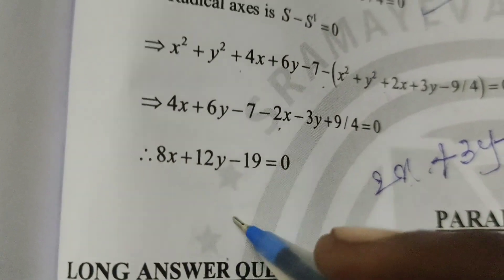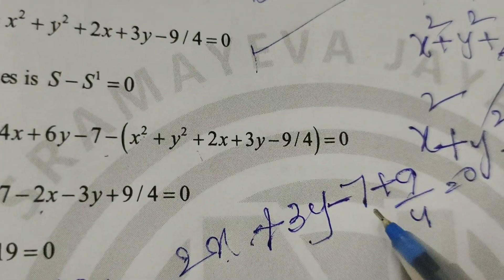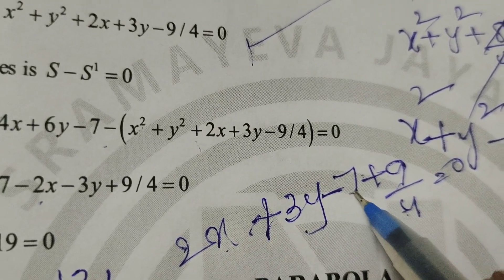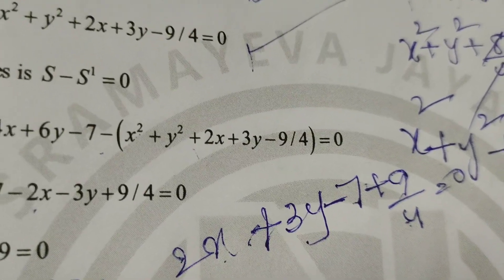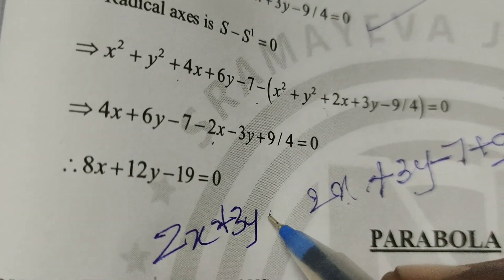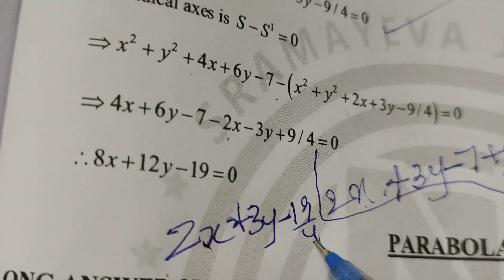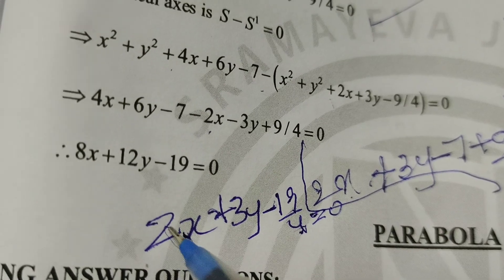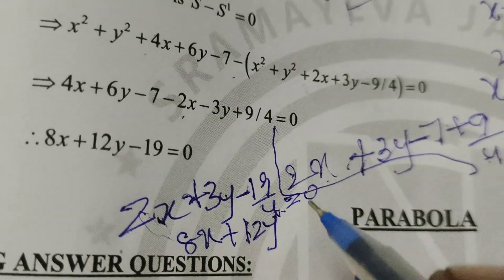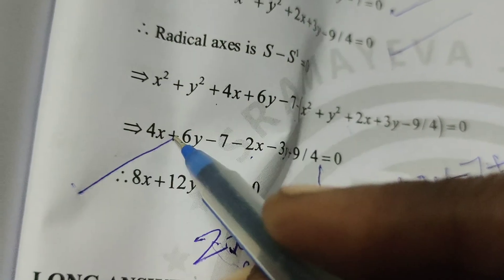Simplifying: 2x + 3y - 7 + 9/4 = 0. Converting -7 to fourths gives -28/4, so -28/4 + 9/4 = -19/4. Taking LCM = 4: 8x + 12y - 29 = 0. This is the final radical axis equation.